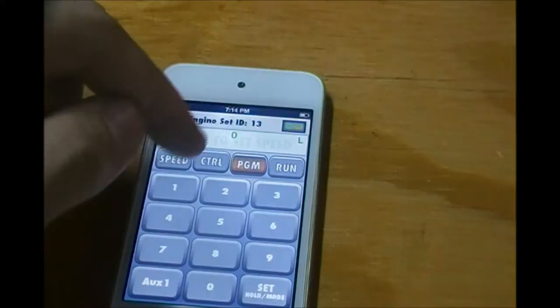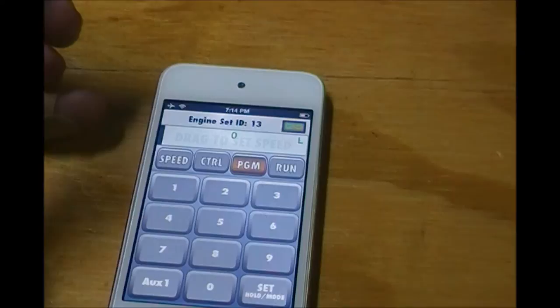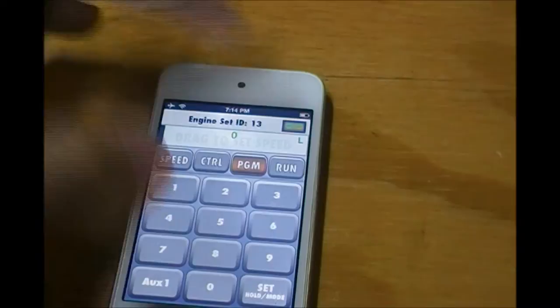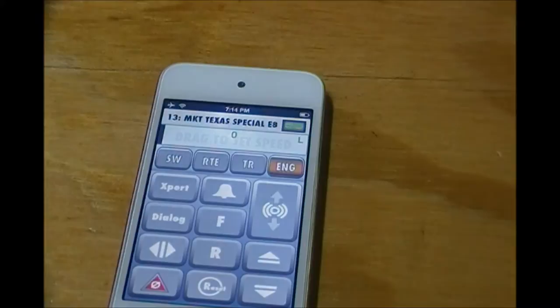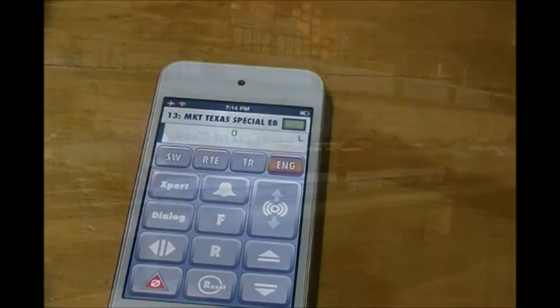If we go to program, this one here is for setting new IDs, like let's say the engine that you got is brand new and you haven't even programmed it into the remote. You can use this to program it in. I haven't done this so I don't know how it works. And if we go back to run, we're back to where we were. So now, let's go ahead and grab a locomotive and take a look at how we run trains using this.